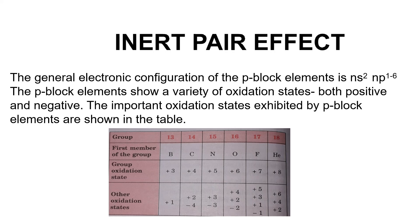The maximum oxidation state shown by a p-block element is equal to the total number of valence electrons. The first member of each group 13 to 17 of the p-block differs from the remaining members of their corresponding group in two major respects: number one, small size, and number two, absence of vacant d-orbitals in the valence shell. The important oxidation states exhibited by p-block elements are shown in the table.